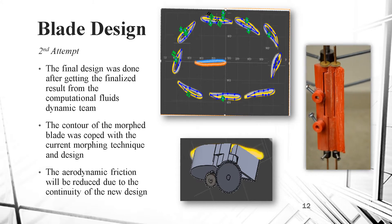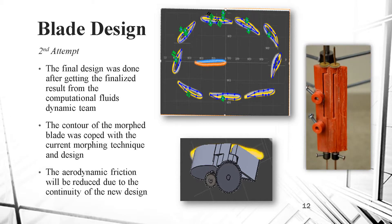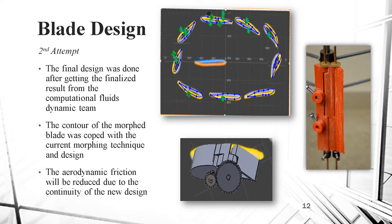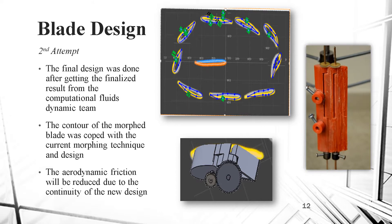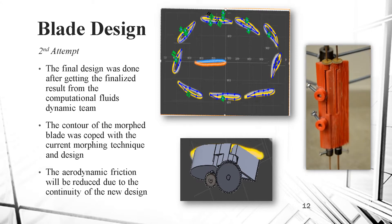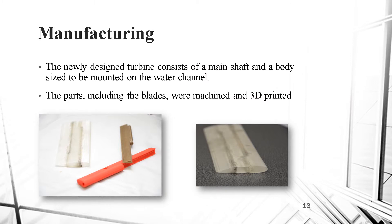The second attempt. The final design was done after getting the finalized result from the computational fluids dynamic team. The contour of the morphed blade was coped with the current morphing technique and design. The aerodynamic friction will be reduced due to the continuity of the new design. The new design of the flaps ensured a continuity in the surface and a full match. The newly designed turbine consists of a main shaft and a body sized to be mounted on the water channel. The parts, including the blades, were machined and 3D printed. We can see a sample of a 3D printed blade in the pictures.